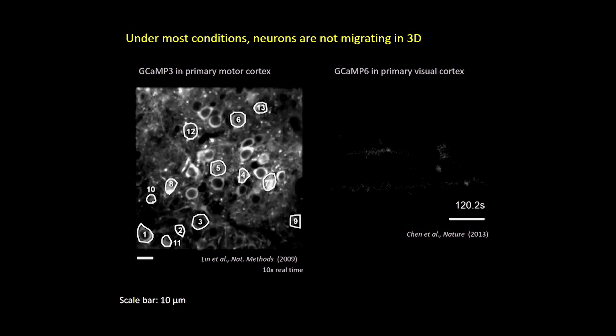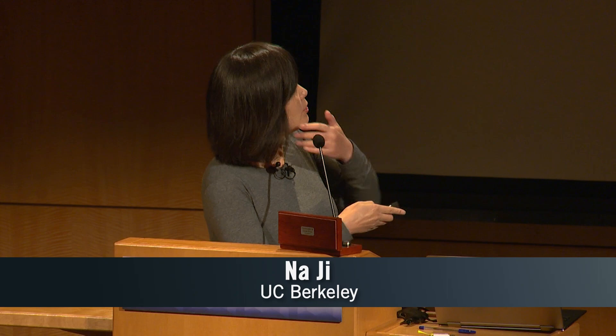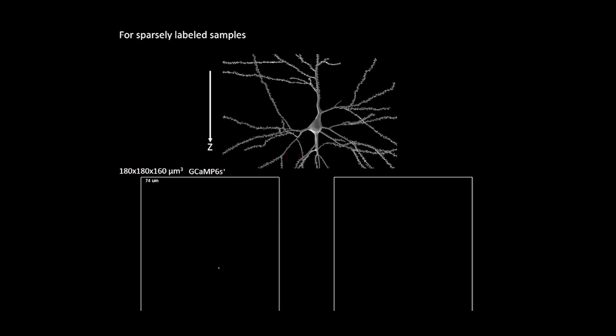Despite all that activity, you would probably also notice that nothing structural is changing — the neurons are not moving around. They stay put, held in space by the actual cytoskeleton. They are so stationary that they maintain constant position even at the level of a single synapse.